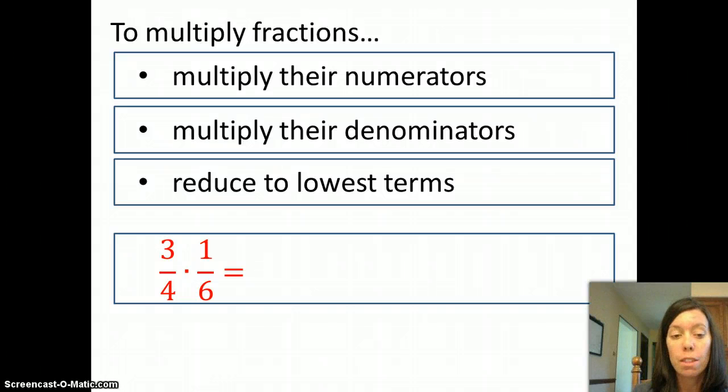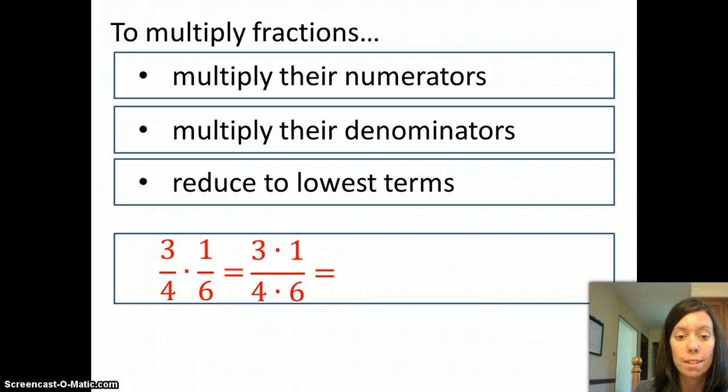So let's look at 3/4 times 1/6. We look at the numerators, the numerators are 3 and 1, the denominators then 4 and 6, so we'll multiply together 3 times 1 and put the answer over 4 times 6. 3 times 1 is 3, 4 times 6 is 24, so this is the result.